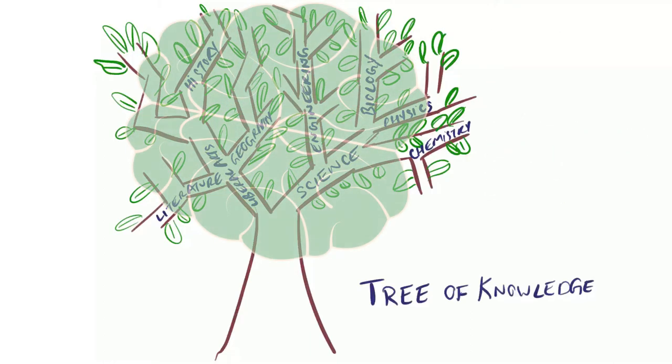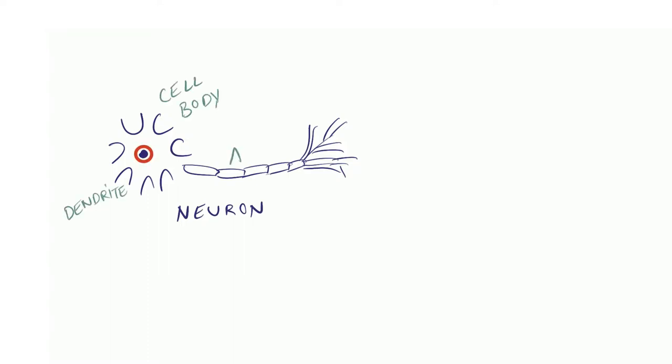Let us now connect this analogy of a tree of knowledge with how our brain really works. Our brain is made of cells called neurons. The main parts of a neuron are nucleus, cell body, dendrites and axon.